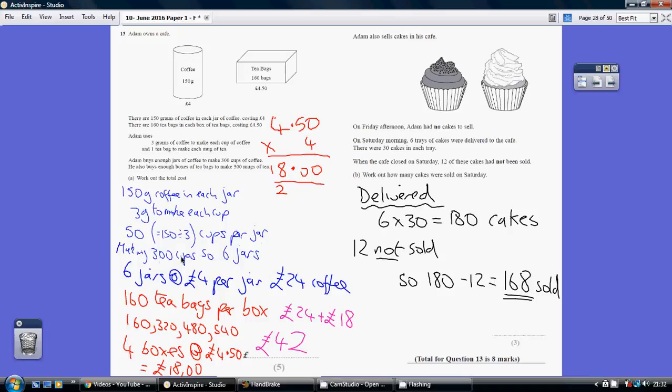Now, we need to make 300 cups, and given we can get 50 cups from a jar, we're going to need 6 jars. Because 300 divided by 50 is 6. So, 6 jars at £4 a jar, that's £24 for the coffee.